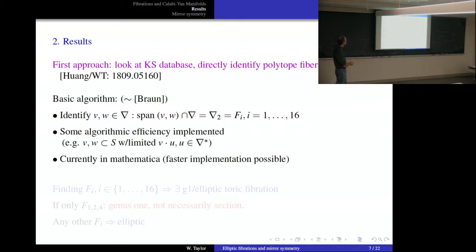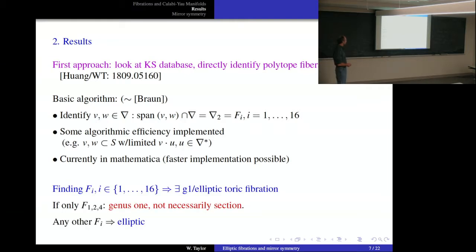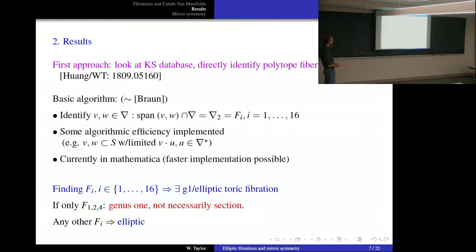We find cases in the Kreuzer-Skarke database where one of these Fᵢ fiber types is present, giving genus-one or elliptic fibrations. If we have fibrations only by F1, F2, and F4, we have genus-one fibrations without a guaranteed section, though there might be a non-toric section. Any other Fᵢ means we have a manifest elliptic fibration.